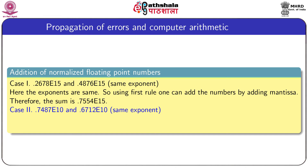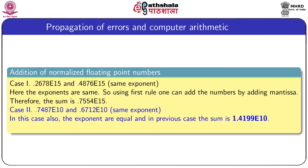In case 2, the exponents are also the same (10). Adding the mantissas directly gives 1.4199 e10, but since our computer stores only 4 significant figures, the mantissa contains 5 significant figures and must be reduced. Discarding the last digit 9 from the mantissa, the number becomes 0.1419, and the exponent is adjusted to e11. Note that the mantissa is not rounded off — the digit 9 is completely discarded.